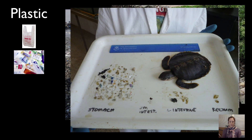Here is a scientist who has dissected a small turtle, and you can see all of the plastics it had eaten. The plastics from the stomach made their way through the intestines, and sometimes they can really tear up the insides of an animal.